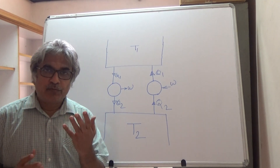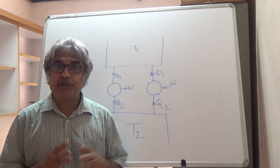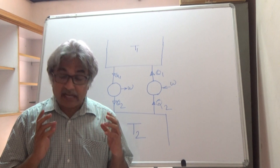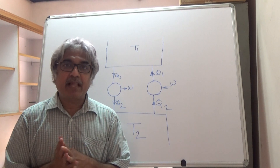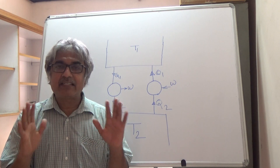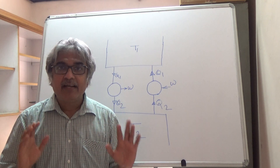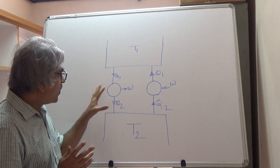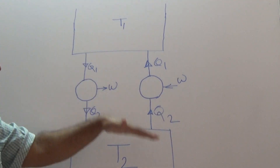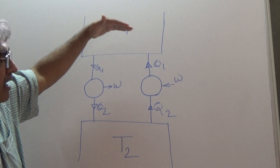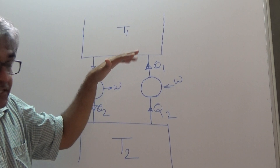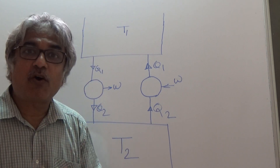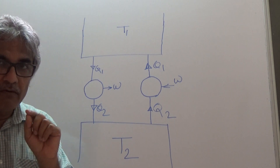Welcome back students. As I mentioned at the end of the last video, I will now be proving that the Kelvin-Planck statement and the Clausius statement are saying the same thing. I have made two sketches — one with an engine and one with a heat pump — both running between two reservoirs: T1 (source) and T2 (sink).